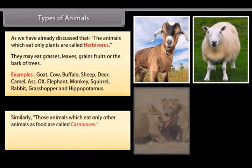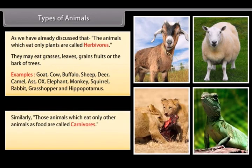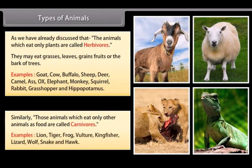Similarly, those animals which eat only other animals as food are called carnivorous. Examples include lion, tiger, frog, vulture, kingfisher, lizard, wolf, snake, and hawk.